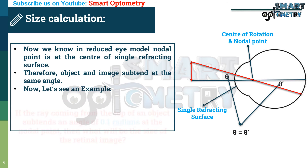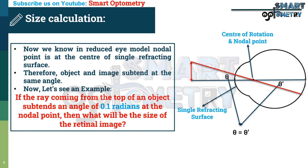Now, let's see an example. If the ray coming from the top of an object subtends an angle of 0.1 radian at the nodal point, then what will be the size of the retinal image? Let's see in the next slide.